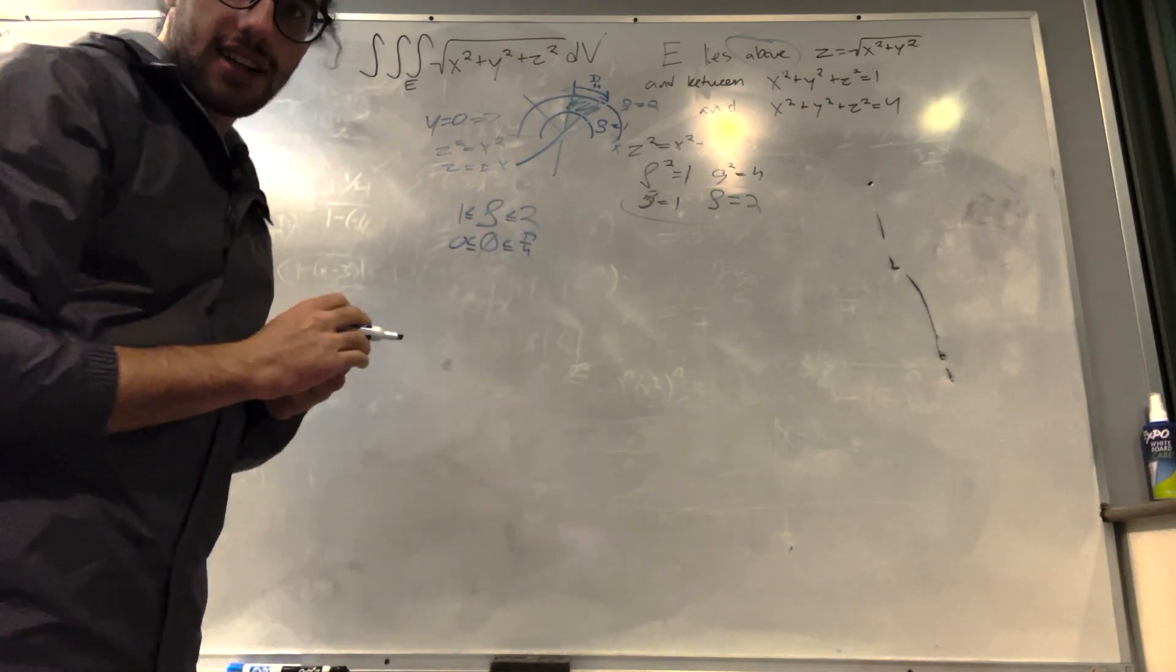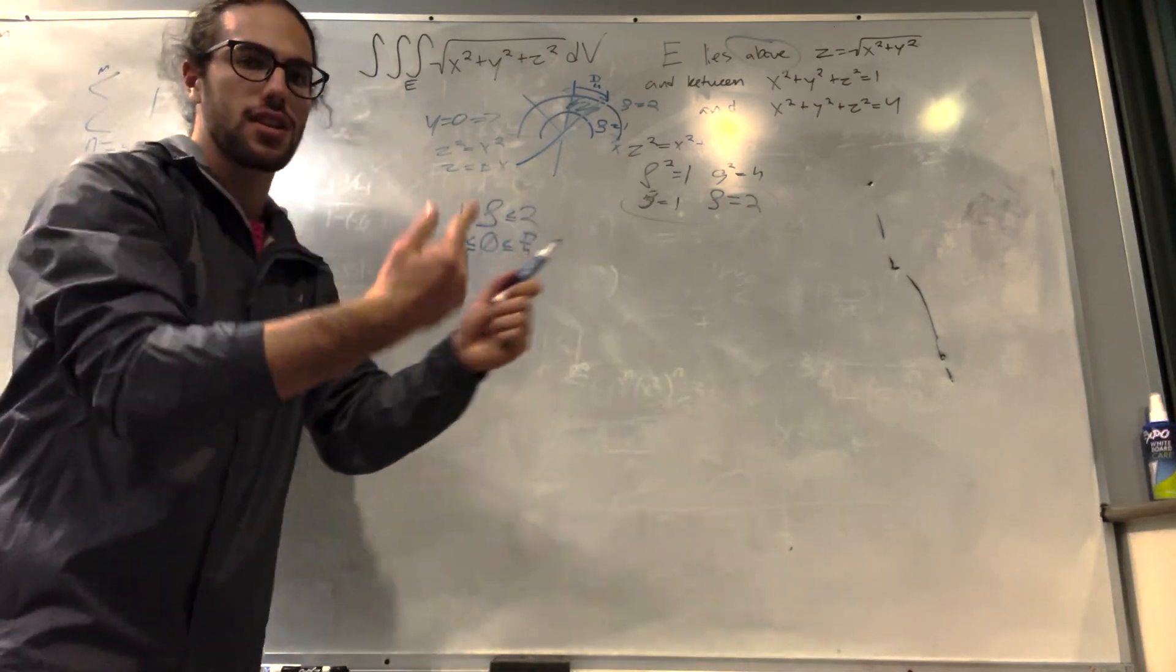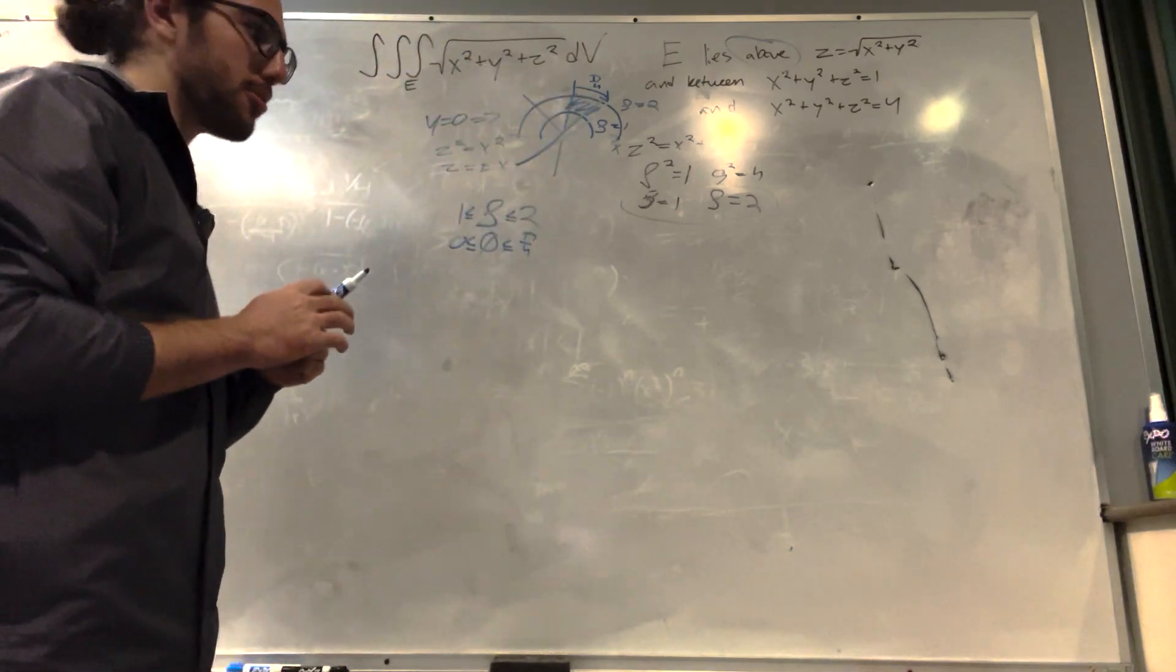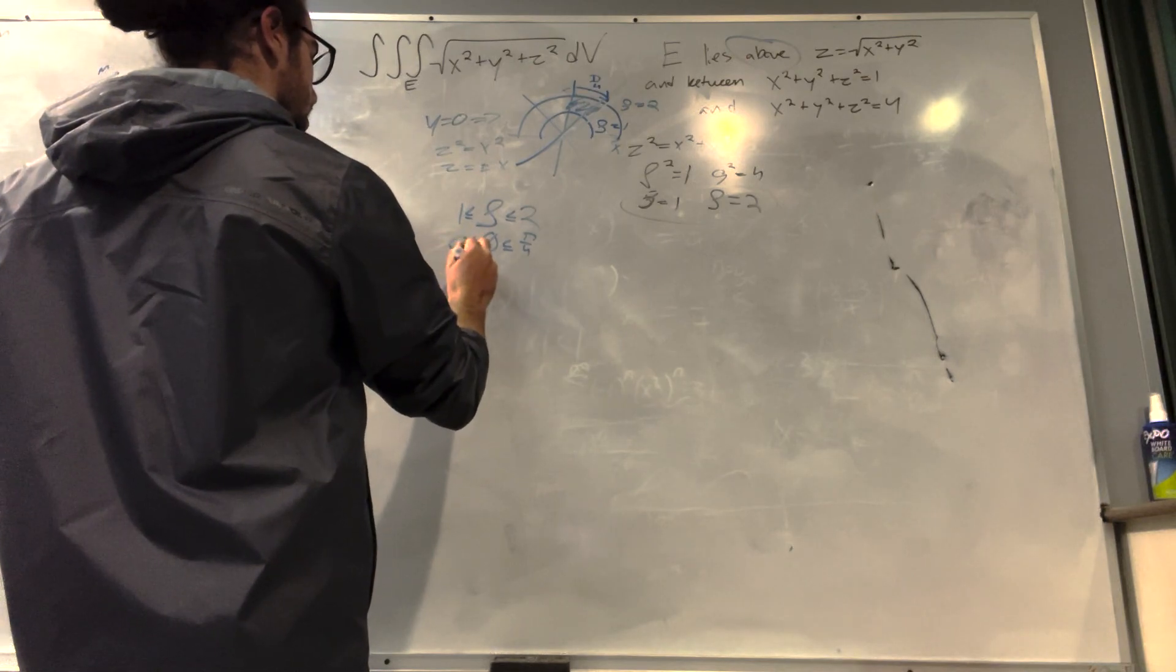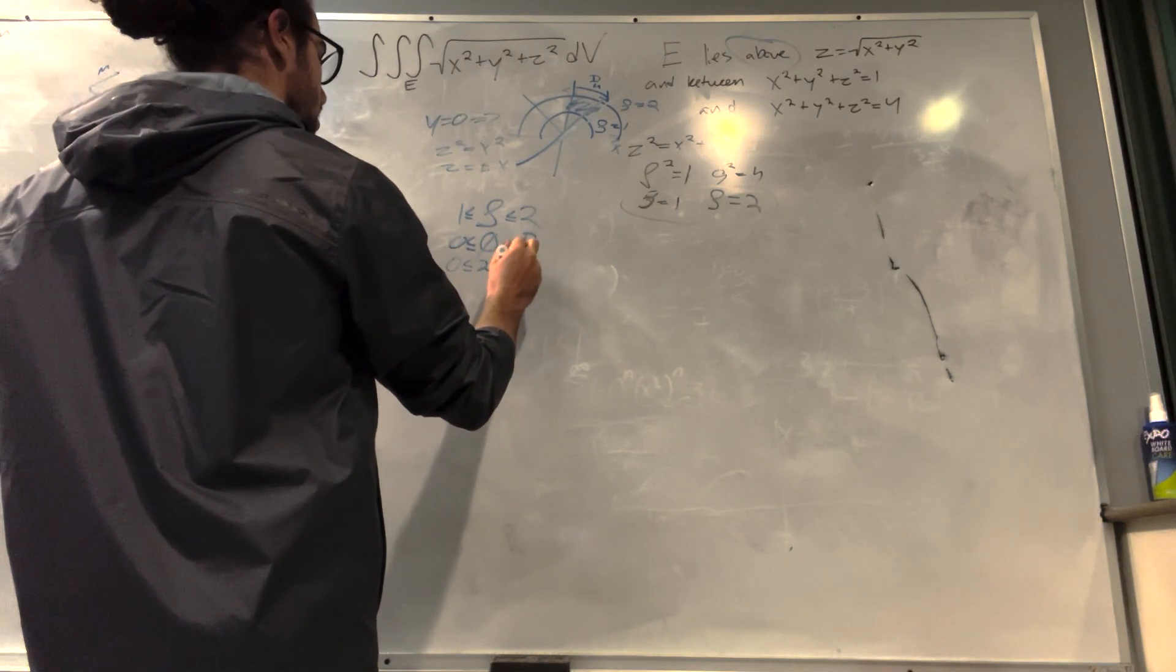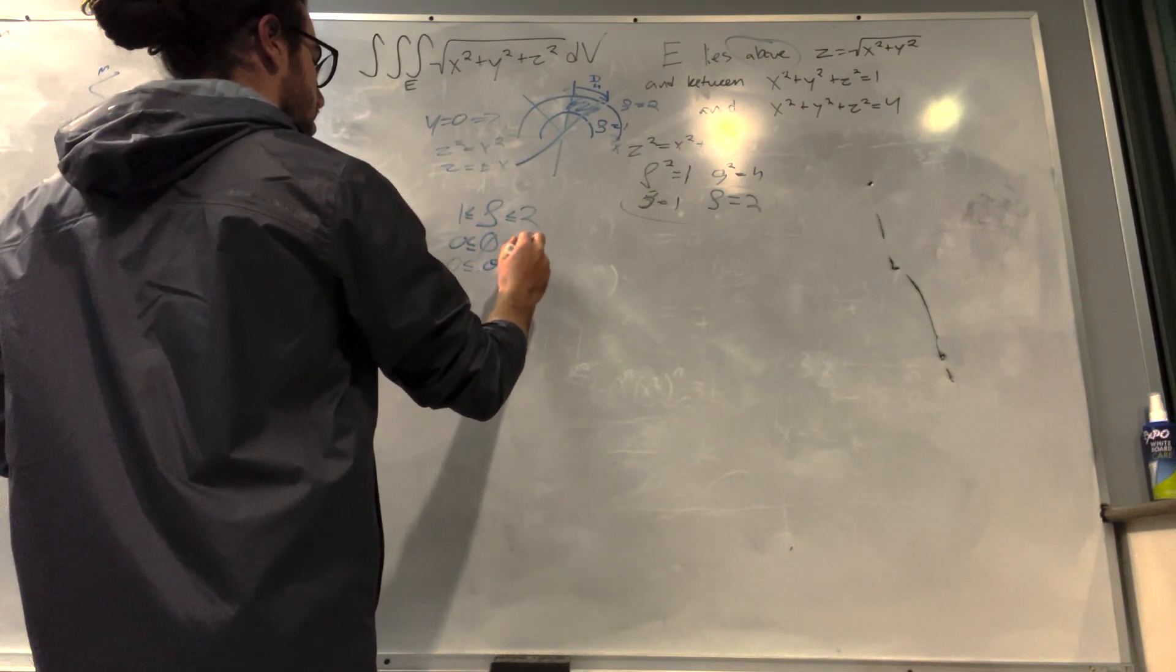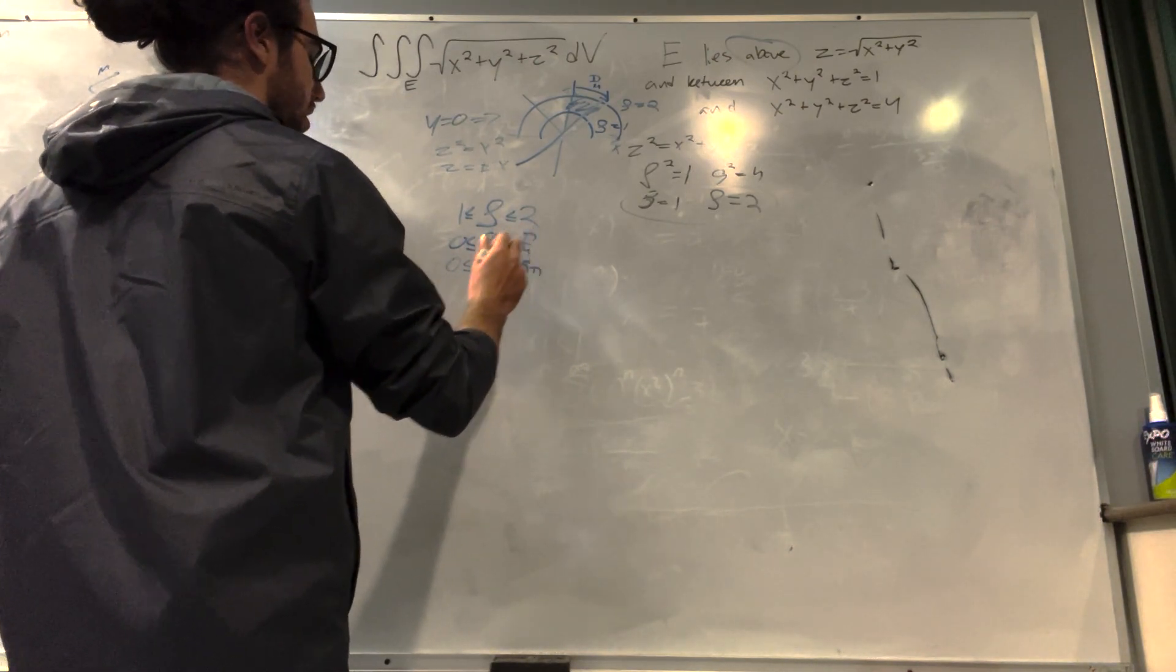And theta, imagine this is a full rotational circle. It's not just on one part. So it's going to go a full circle, which is a full 2 pi. So theta, this is 2 pi.